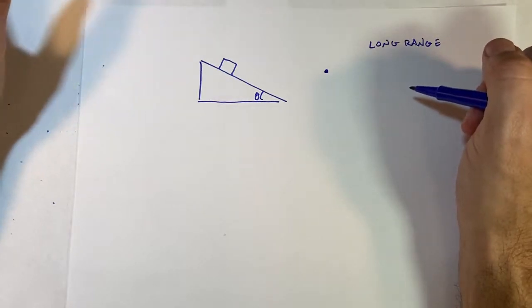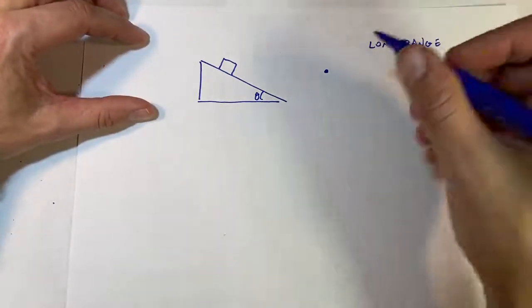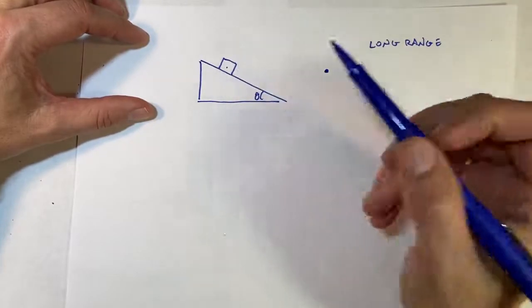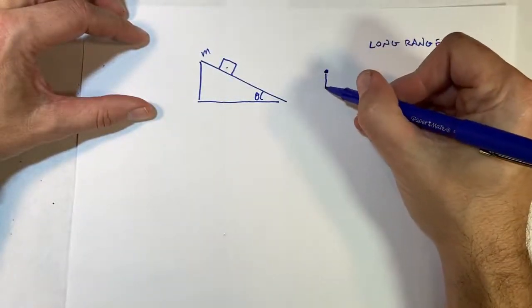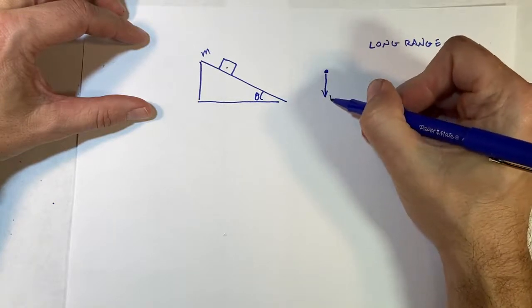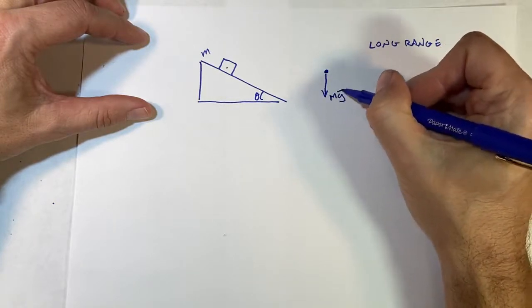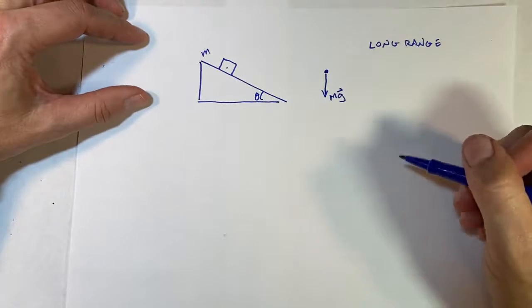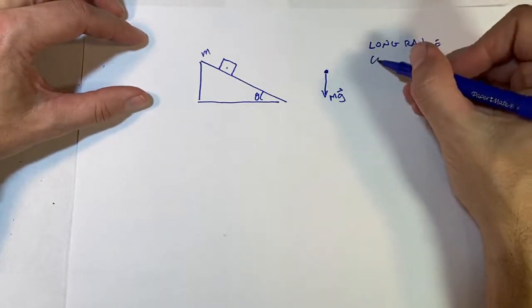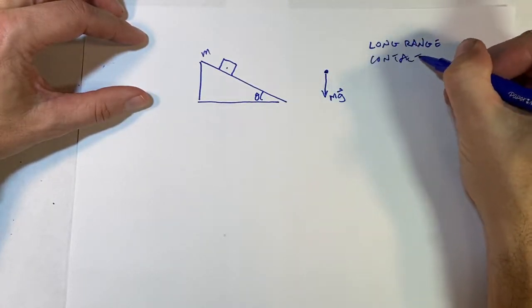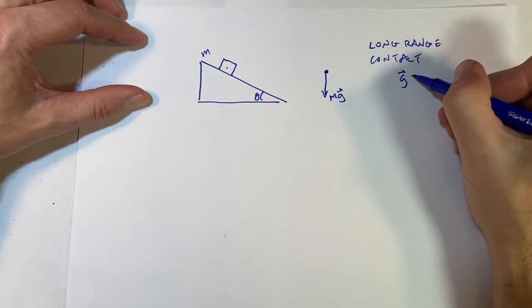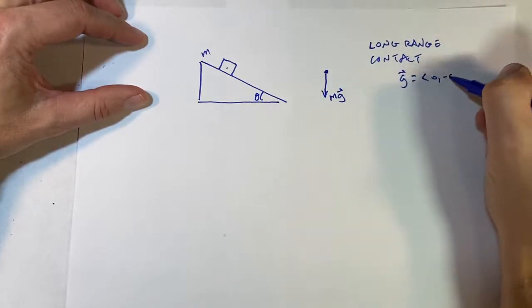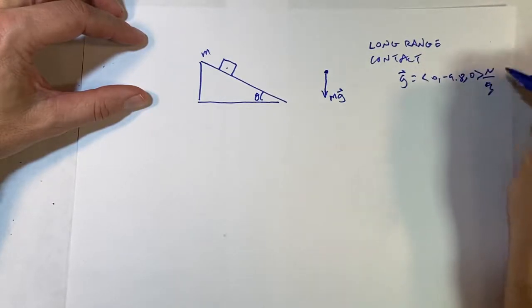And then the other one is a contact force. So in this case, there's only one long range force on this mass right here. It has a mass m. And that's the gravitational force. So that pulls straight down. And it has a magnitude mg. And so here I'm using g as the vector g. Oh, I'm sorry. I did contact forces. Two kinds.